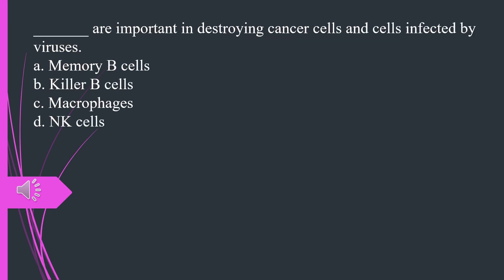What are important in destroying cancer cells and cells infected by viruses. A. Memory B cells B. Killer B cells C. Macrophages D. Natural killer cells. The answer is D, natural killer cells.